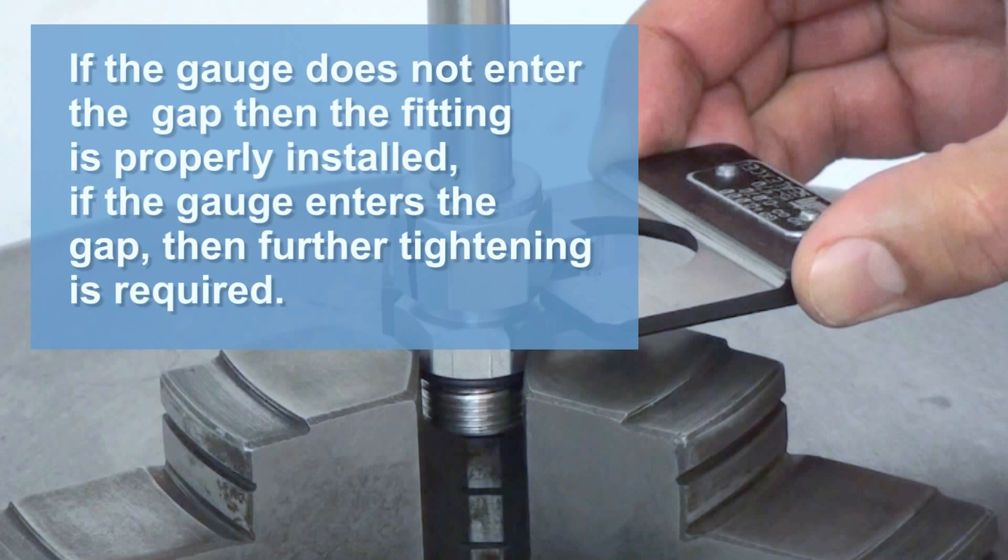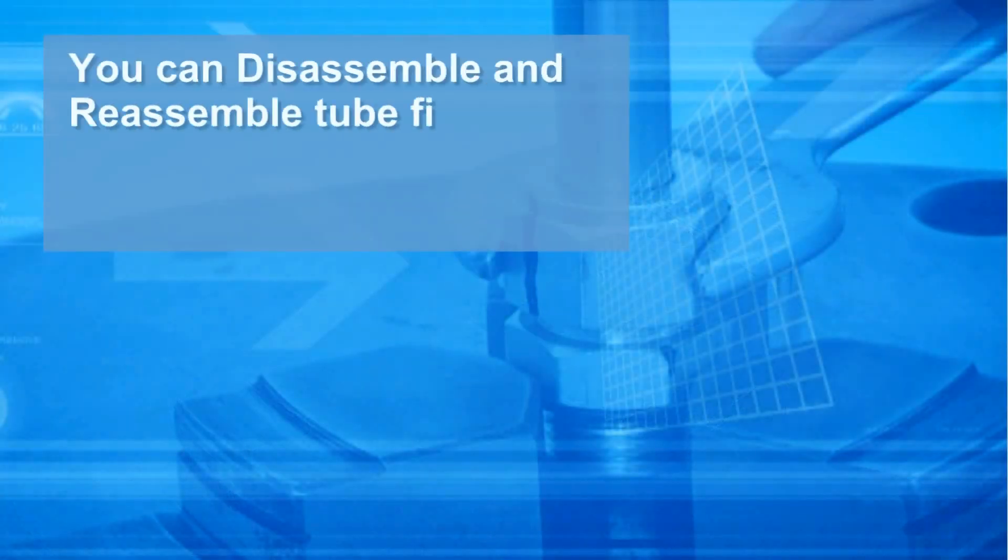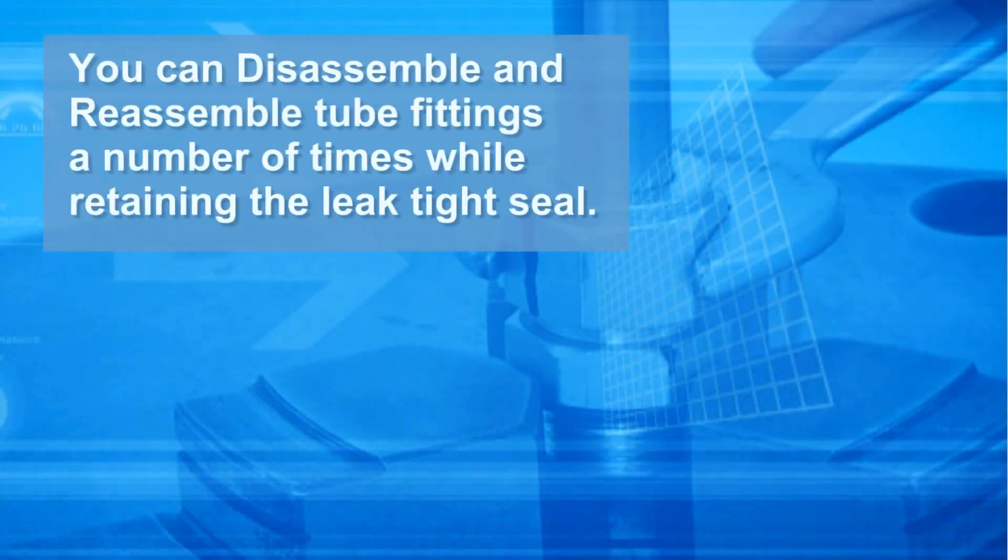If the gauge enters the gap, then further tightening is required. You can disassemble and reassemble tube fittings a number of times while retaining the leak-tight seal.